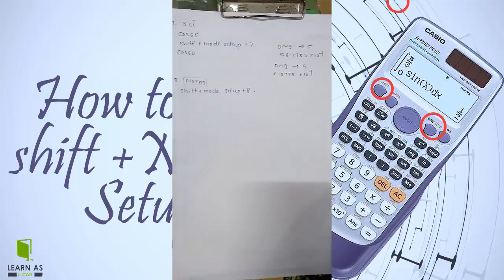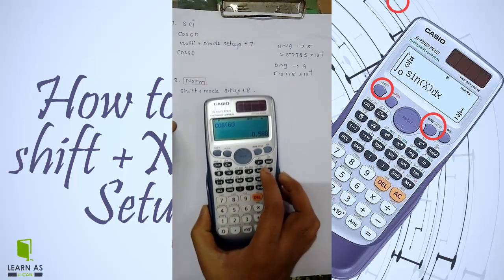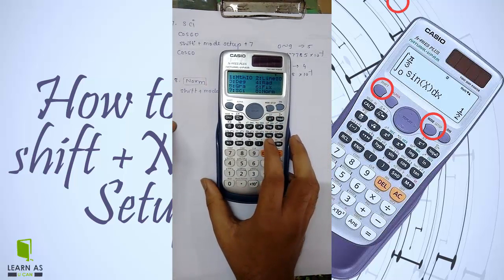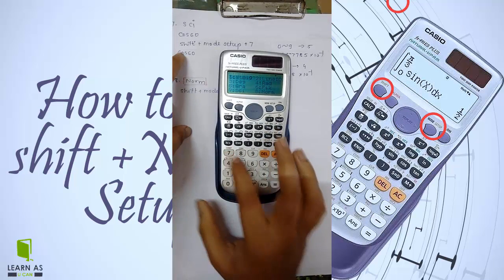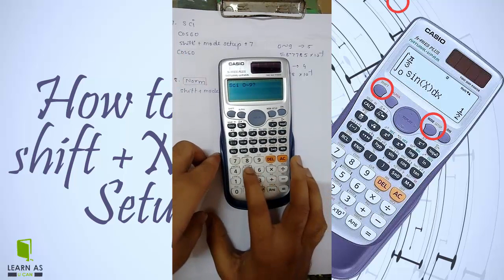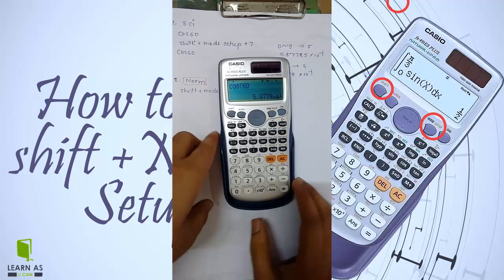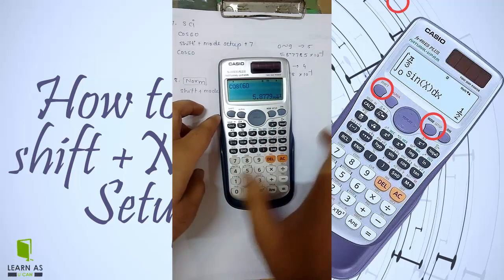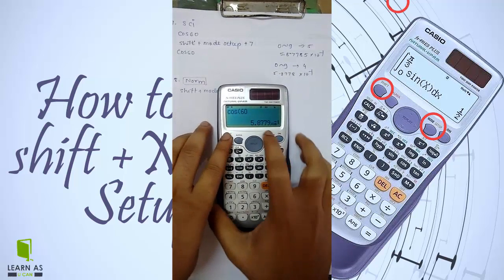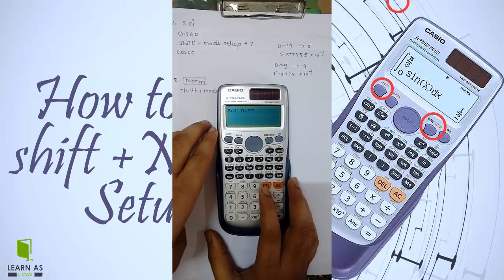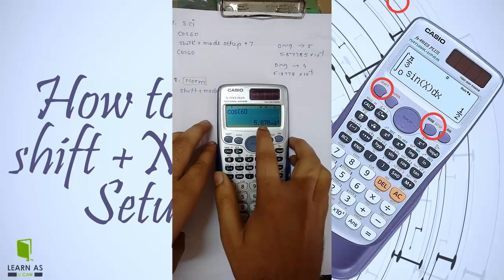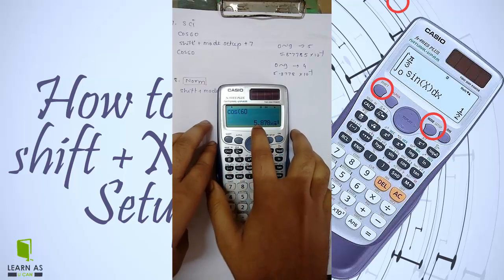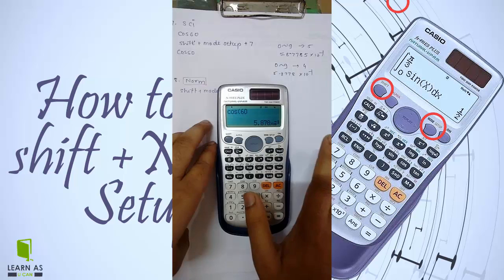For the next option, SCI mode - shift plus mode setup plus 7. For example, 0.9 - I am using 5, so you can see the result is 5.8779. If I select 4, you can see 5.878. You can reduce the digits - only four digits are there from the previous five digits.